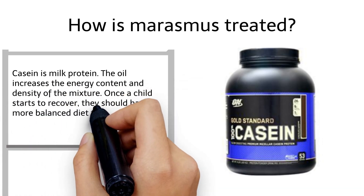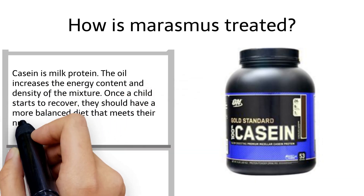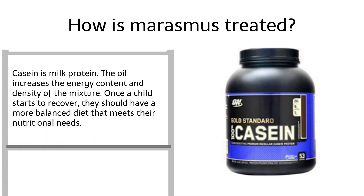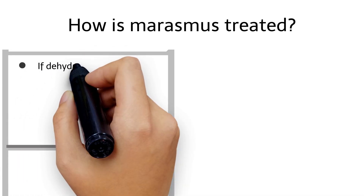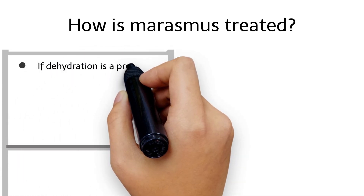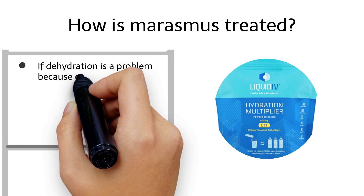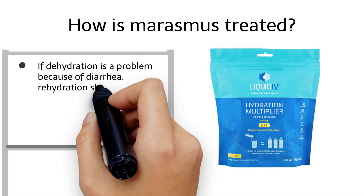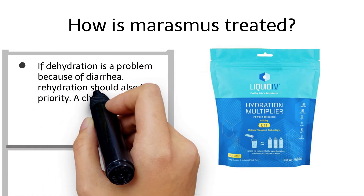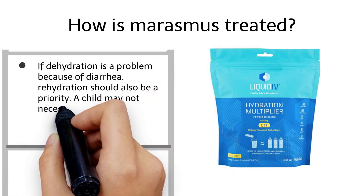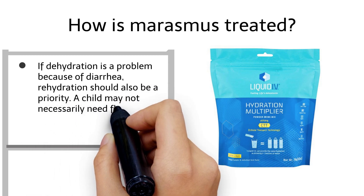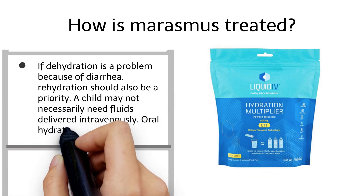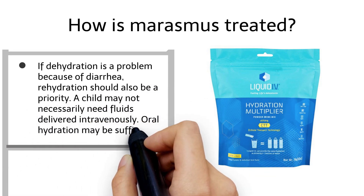Once a child starts to recover, they should have a more balanced diet that meets their nutritional needs. If dehydration is a problem because of diarrhea, rehydration should also be a priority. A child may not necessarily need fluids delivered intravenously — oral hydration may be sufficient.